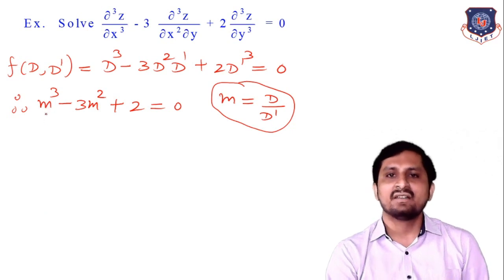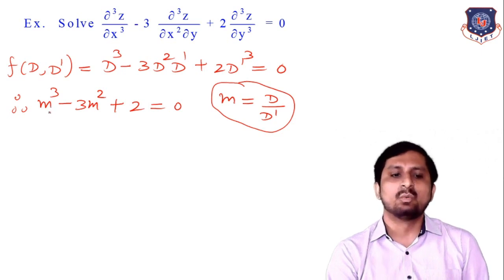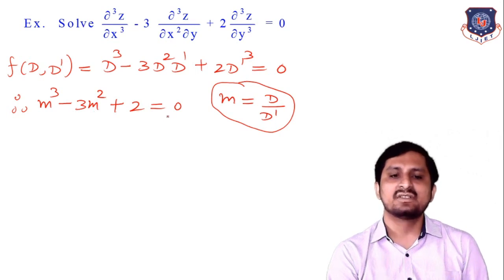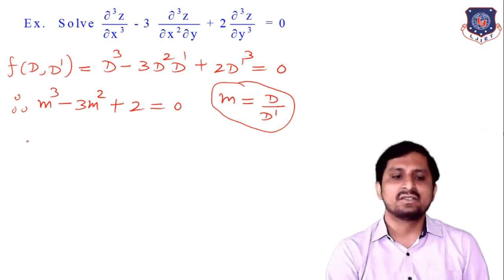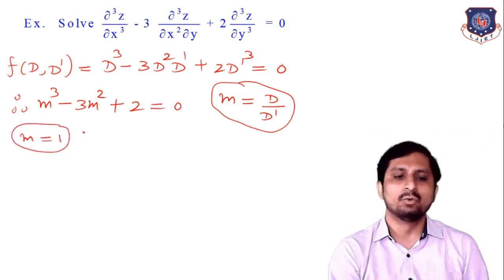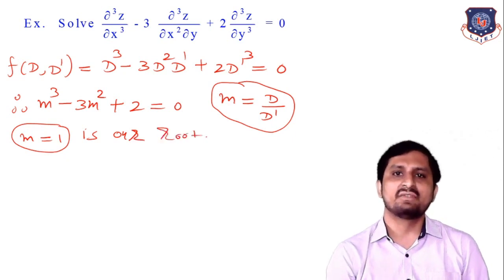If you put m = 1, let's check: 1³ − 3(1²) + 2 = 1 − 3 + 2 = 0. So definitely m = 1 is our first root. This is the root of this equation.